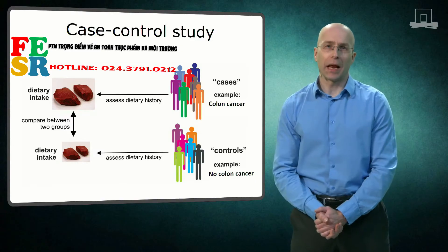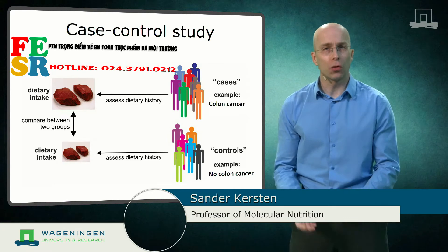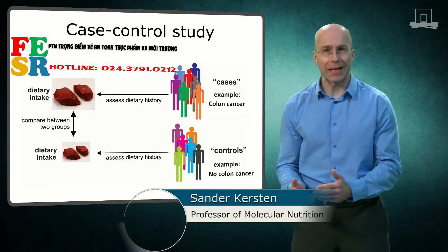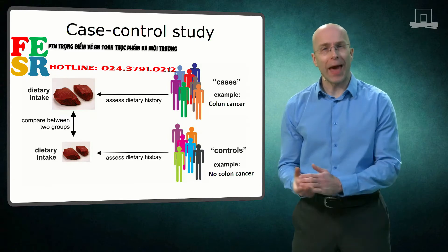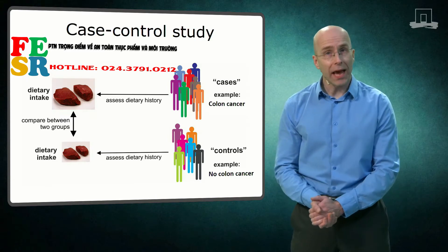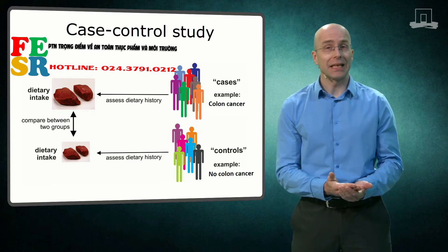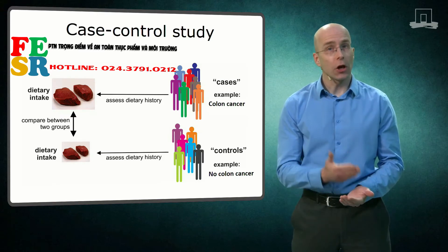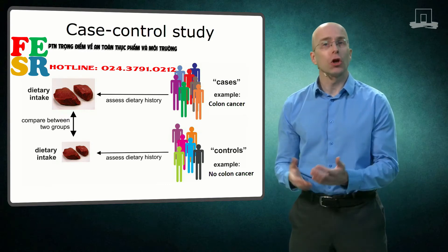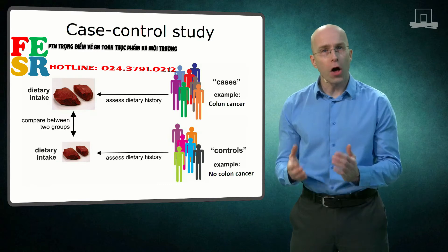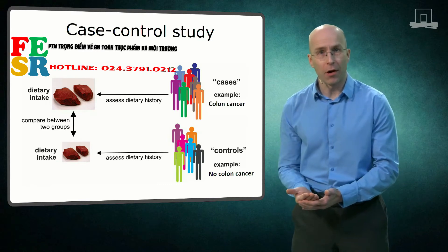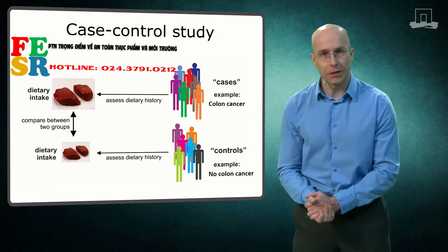The next study design to discuss is the case-control study. Case-control studies are retrospective studies, which means that they look back. The basic design is very simple: you recruit a group of patients with a certain disease, representing the cases, and on the other hand you recruit a group of subjects that do not have the disease, the controls. All subjects are asked about their past dietary habits using a food frequency questionnaire or another type of dietary assessment tool.